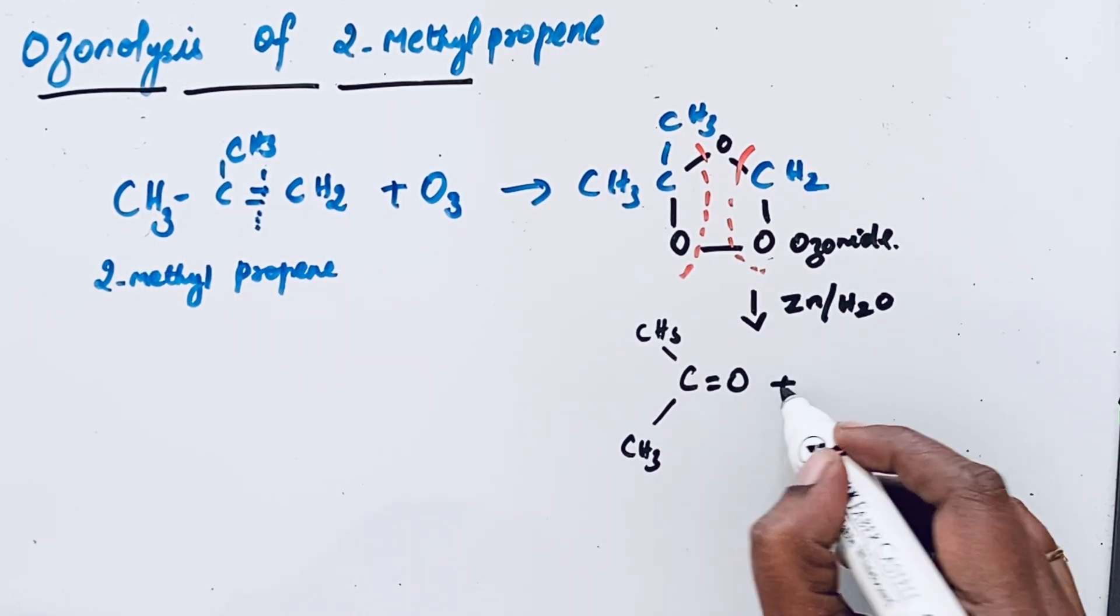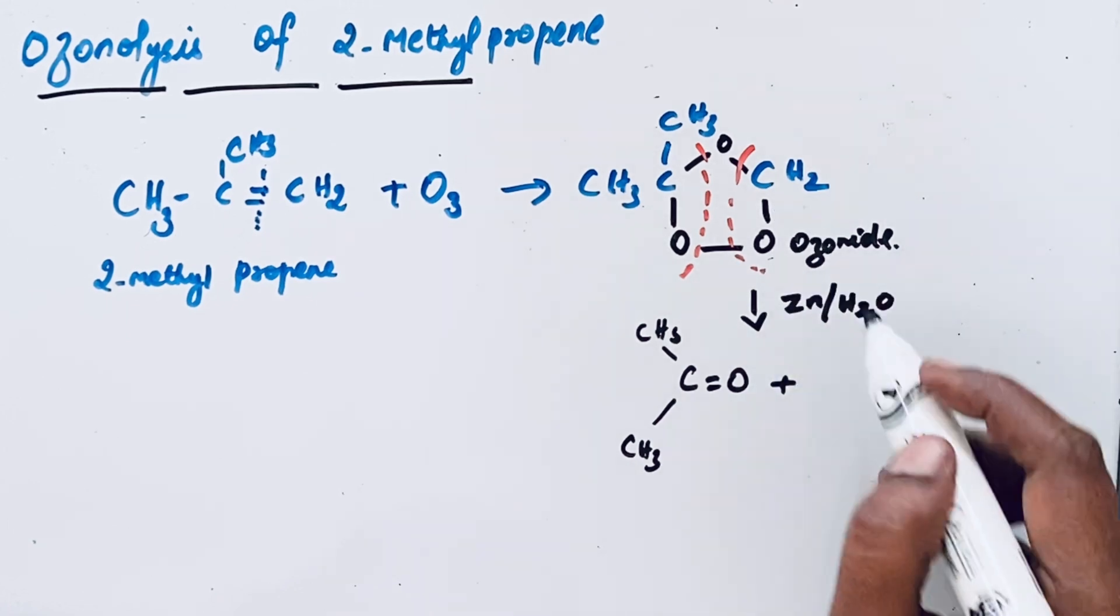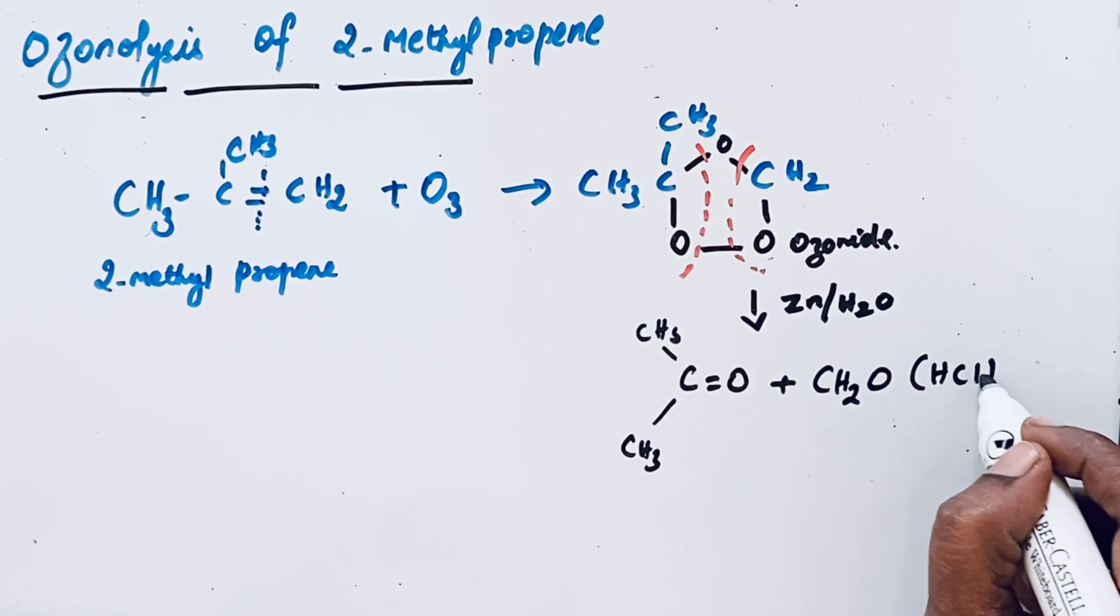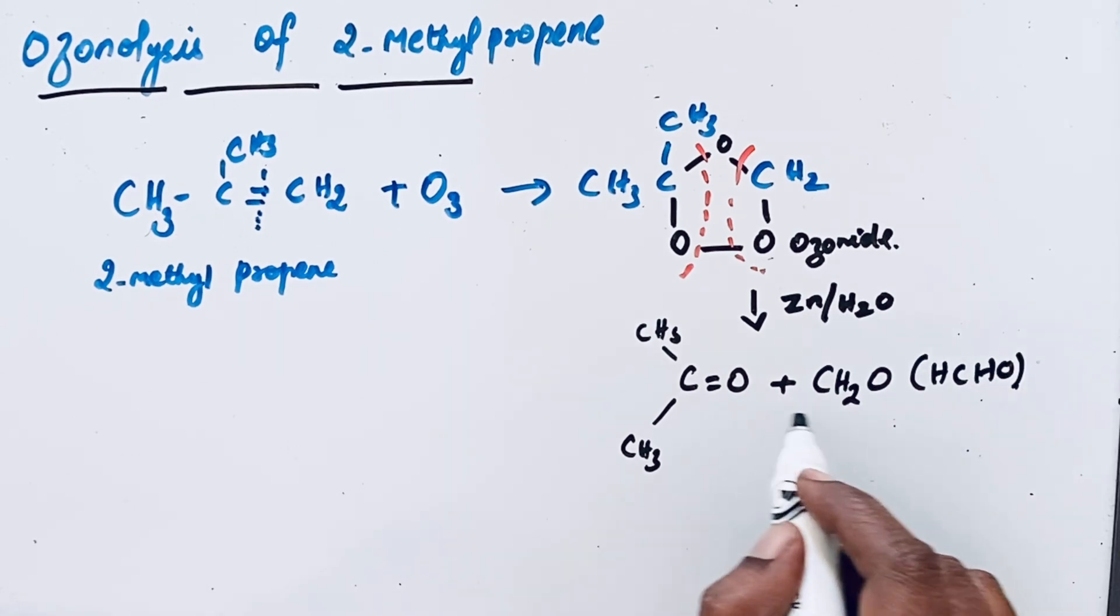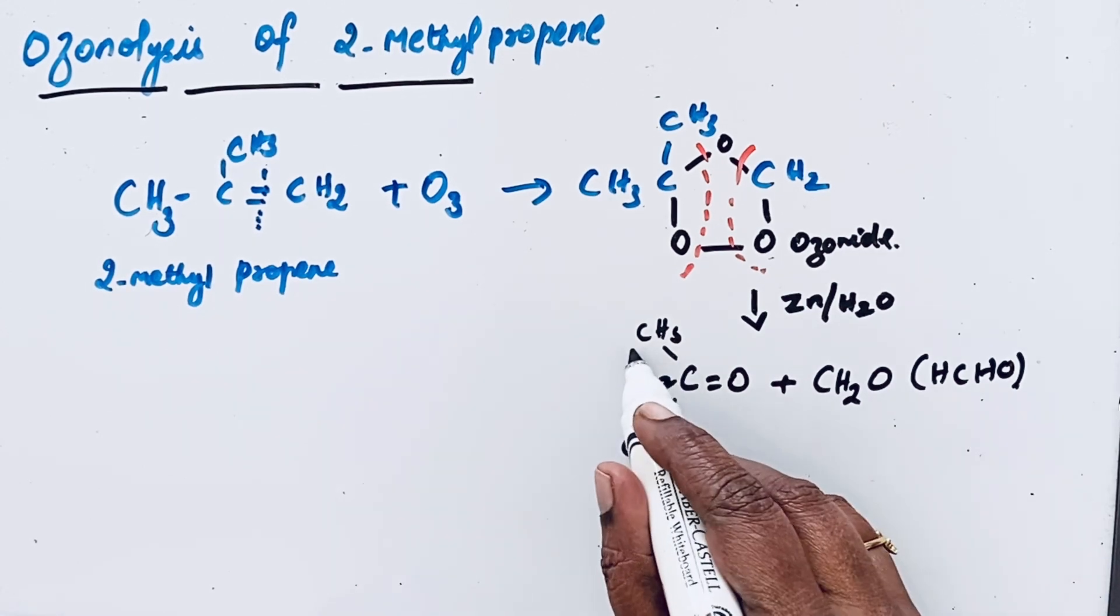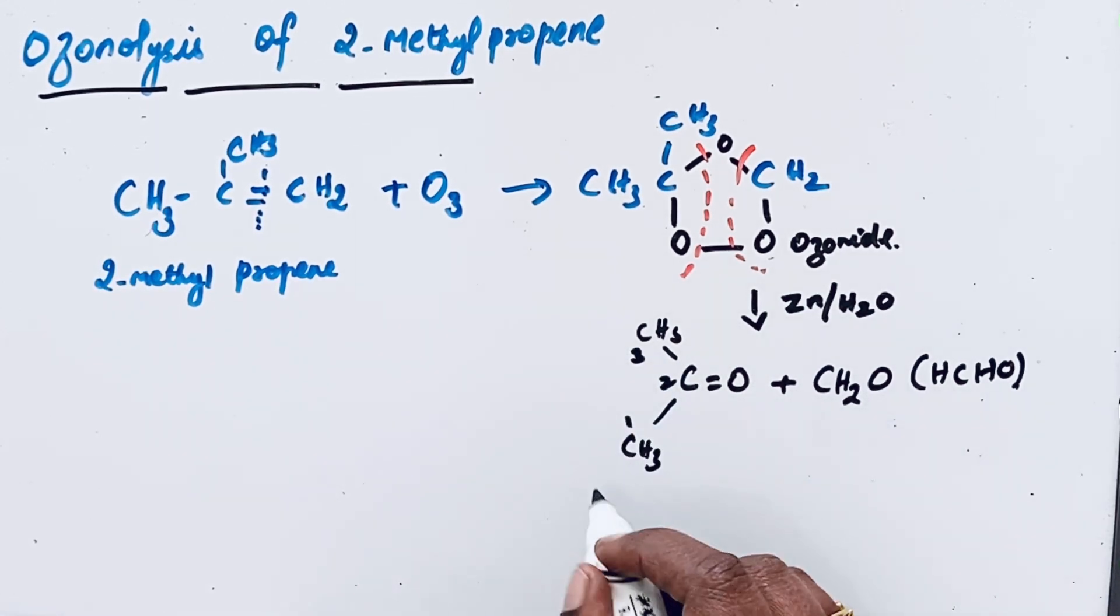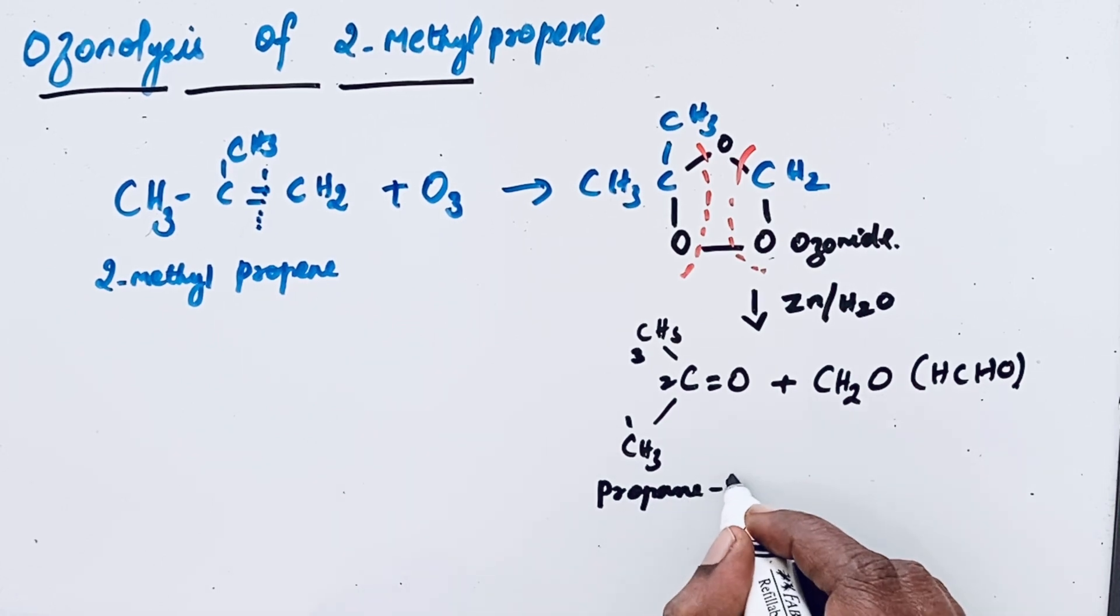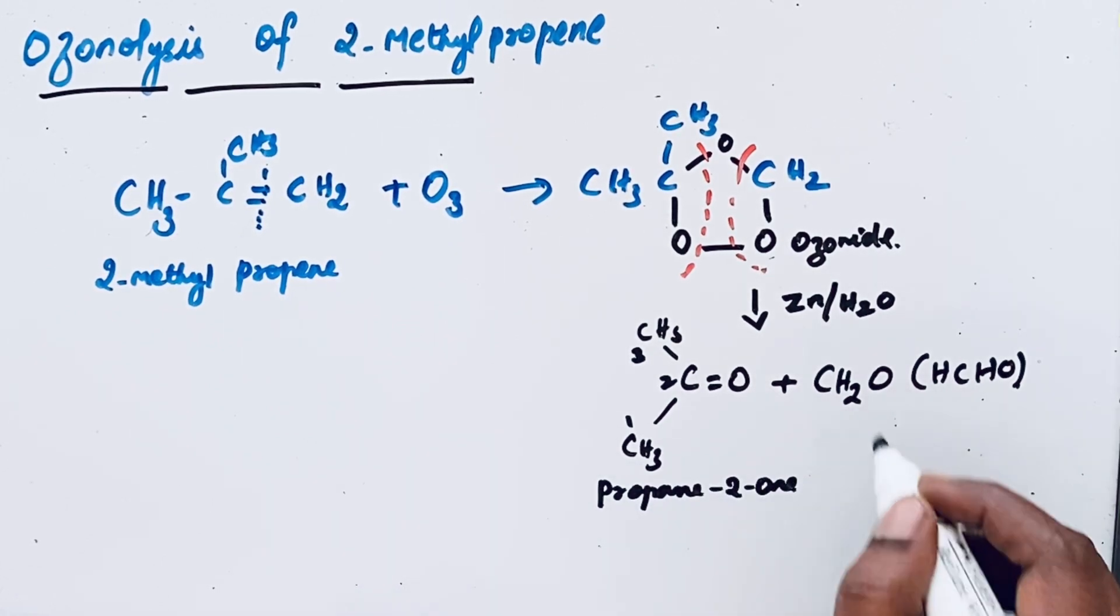Then after that another molecule CH2O that can be written like HCHO. That means there is formation of formaldehyde molecule. Number 1, 2, 3. So there are 3 carbon atoms. Propan-2-one and formaldehyde.